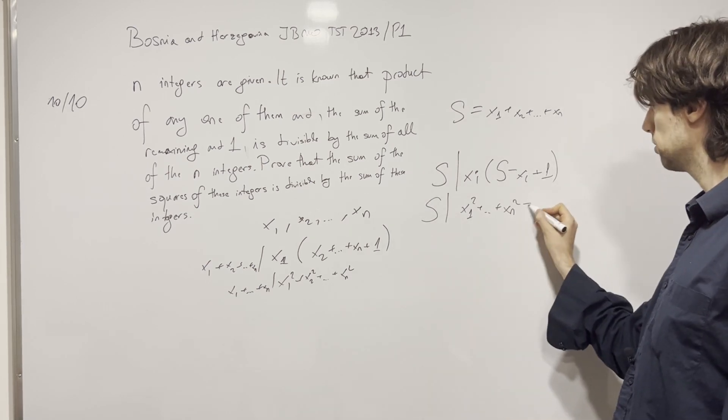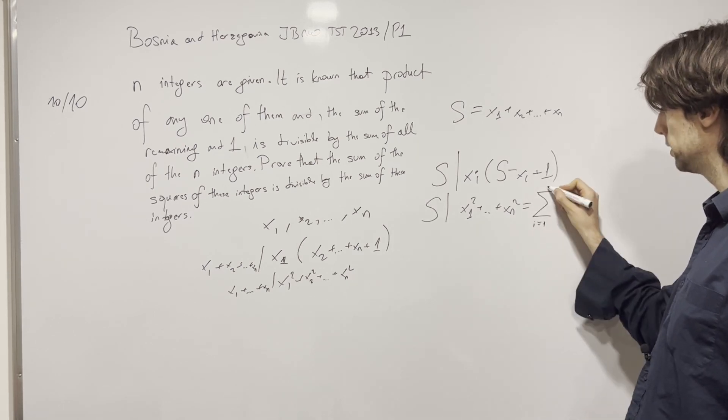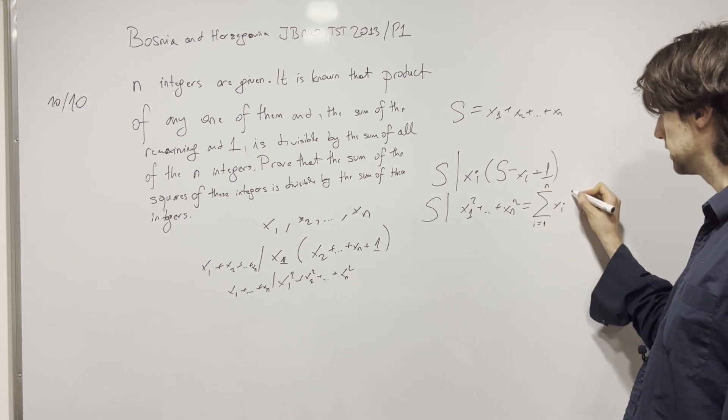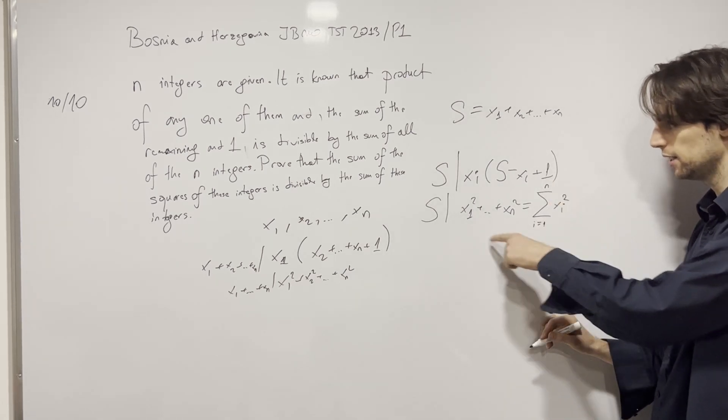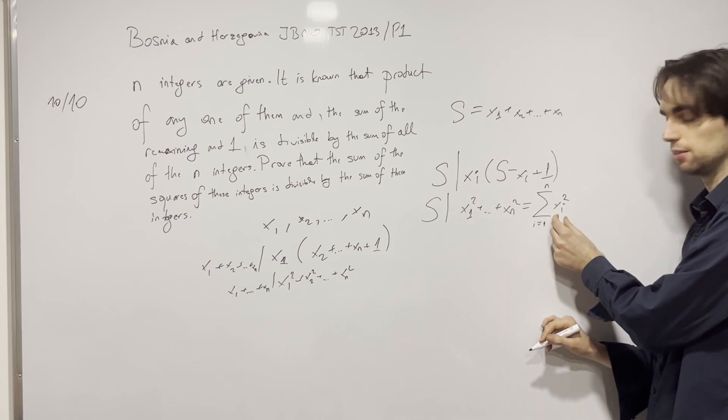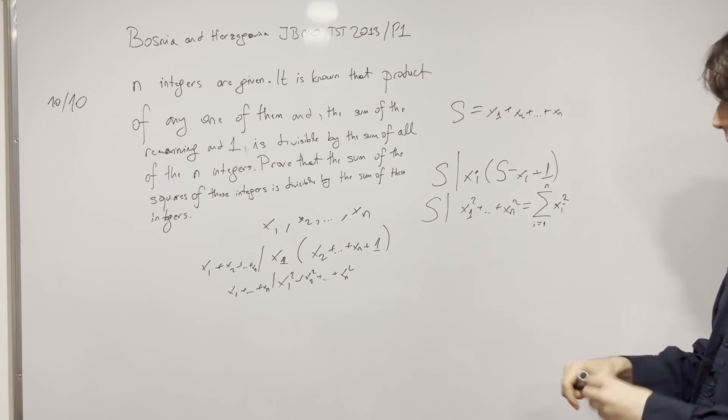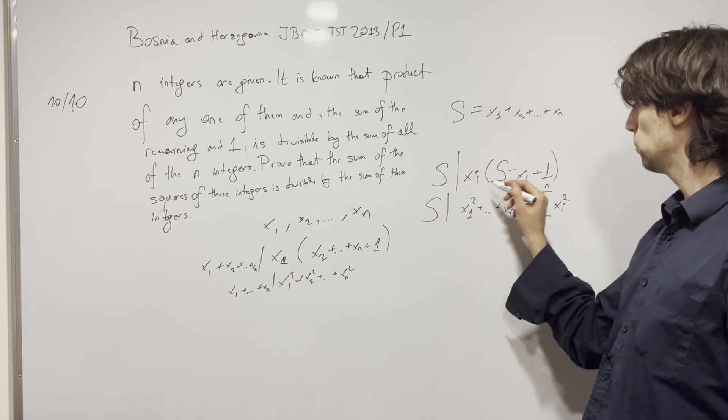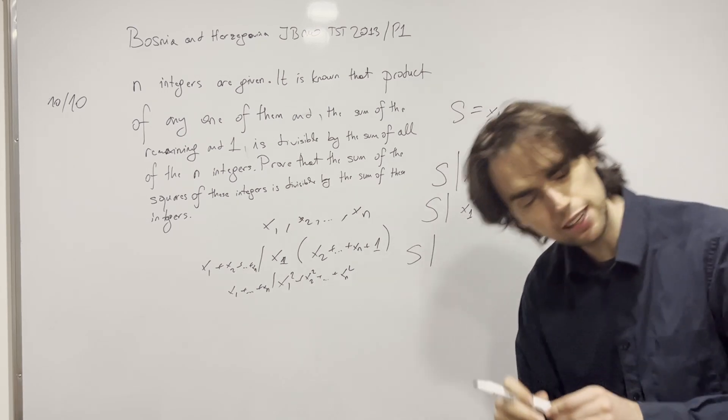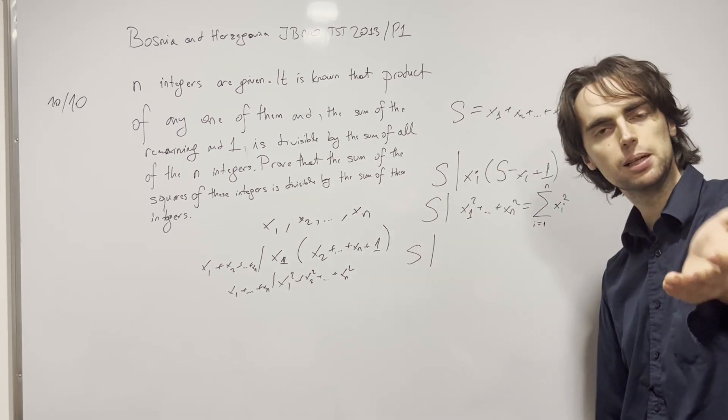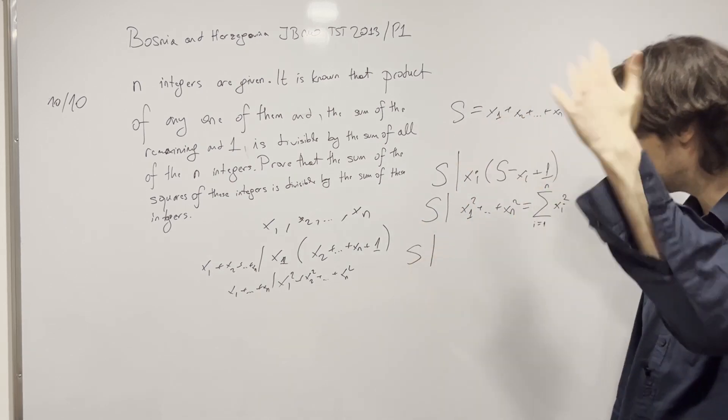And I need to prove that s divides x1 squared plus xn squared. And also here's the terminology. You can also write this as sum of i equals 1 till n xi squared, which means for i is 1 till i is n, we'll have this thing for every single i between 1 and n. That's another way to rewrite the sum. Now what do we get from here? We get from this condition, we get that. Actually we get that. I invite you to pause for 5 minutes and try to push the problem further, maybe even solve it.